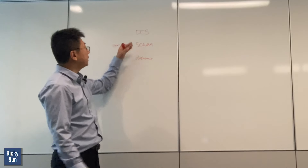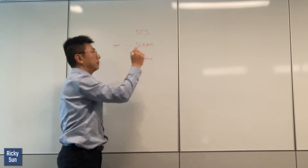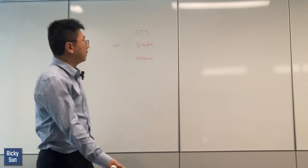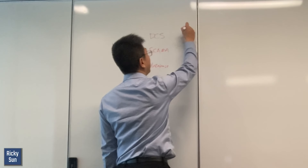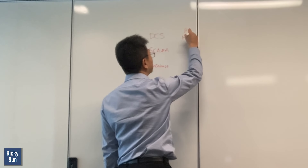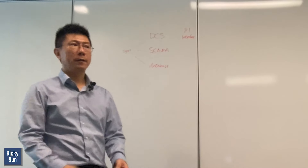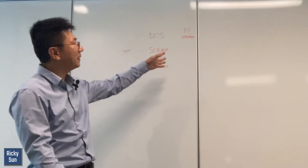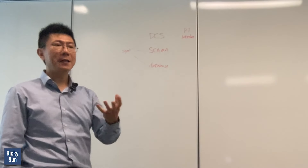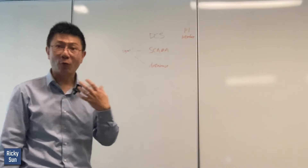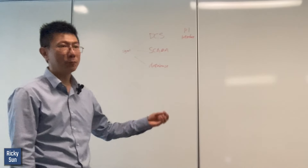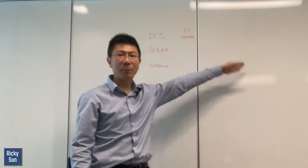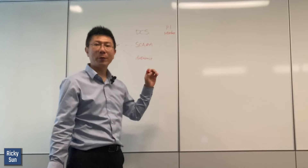These signals get sent to those systems, and then how does the data get to the PI system? The PI system has PI interfaces. There are 452 or so PI interfaces, which means it can collect data from 452 systems. It reads the different system languages and converts them to the PI system.